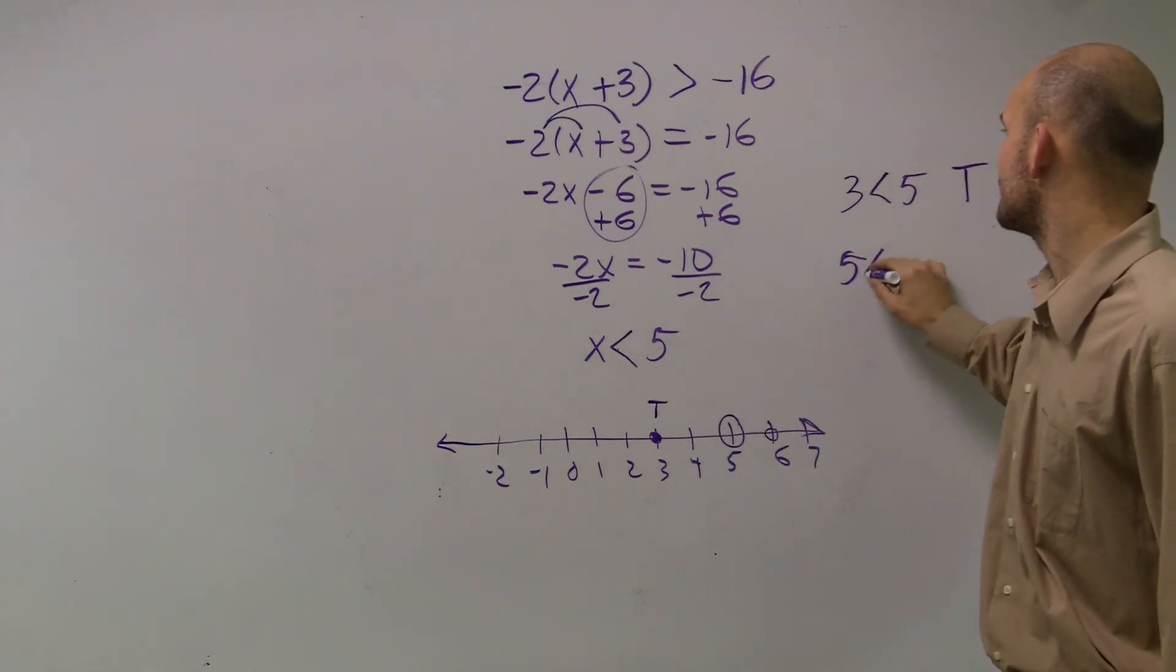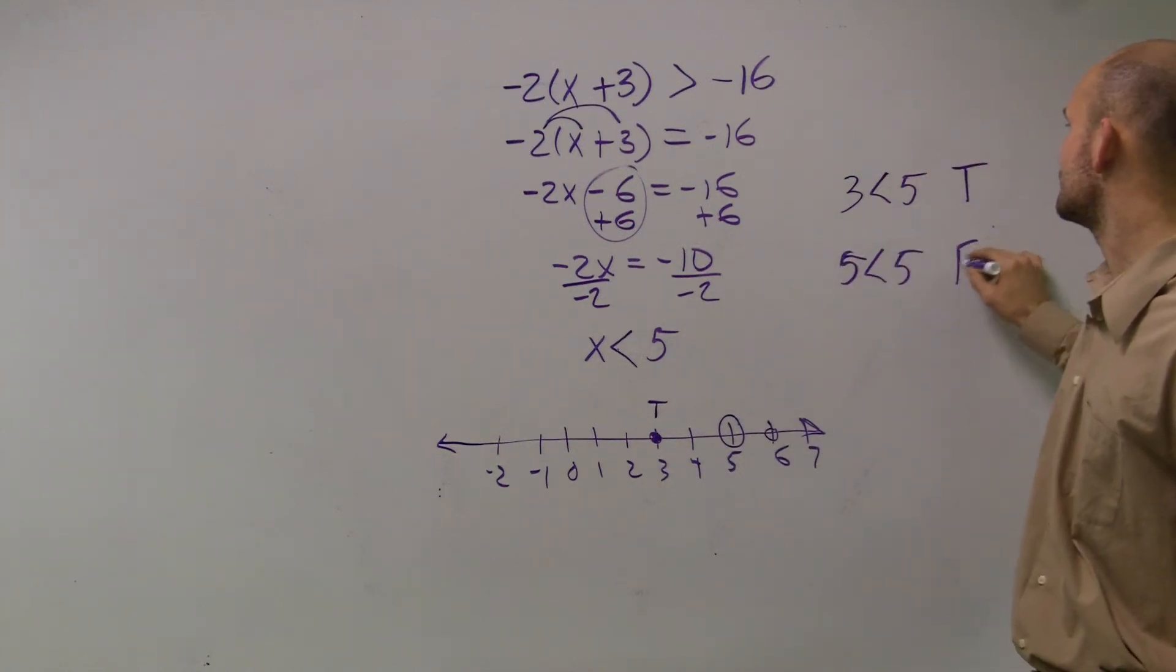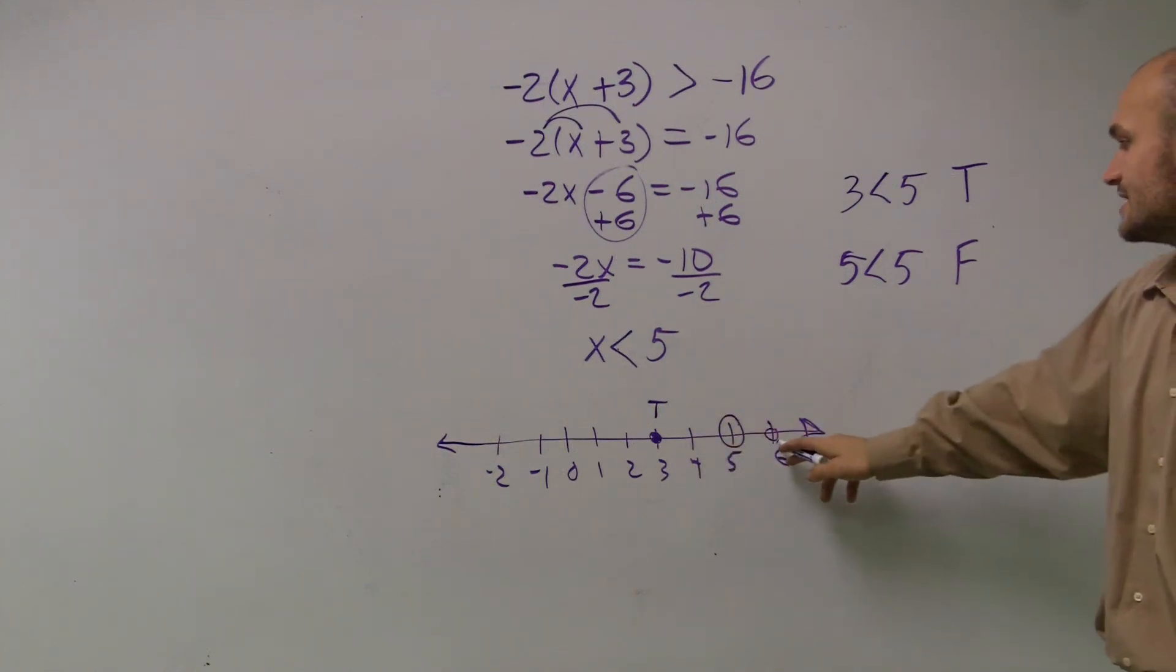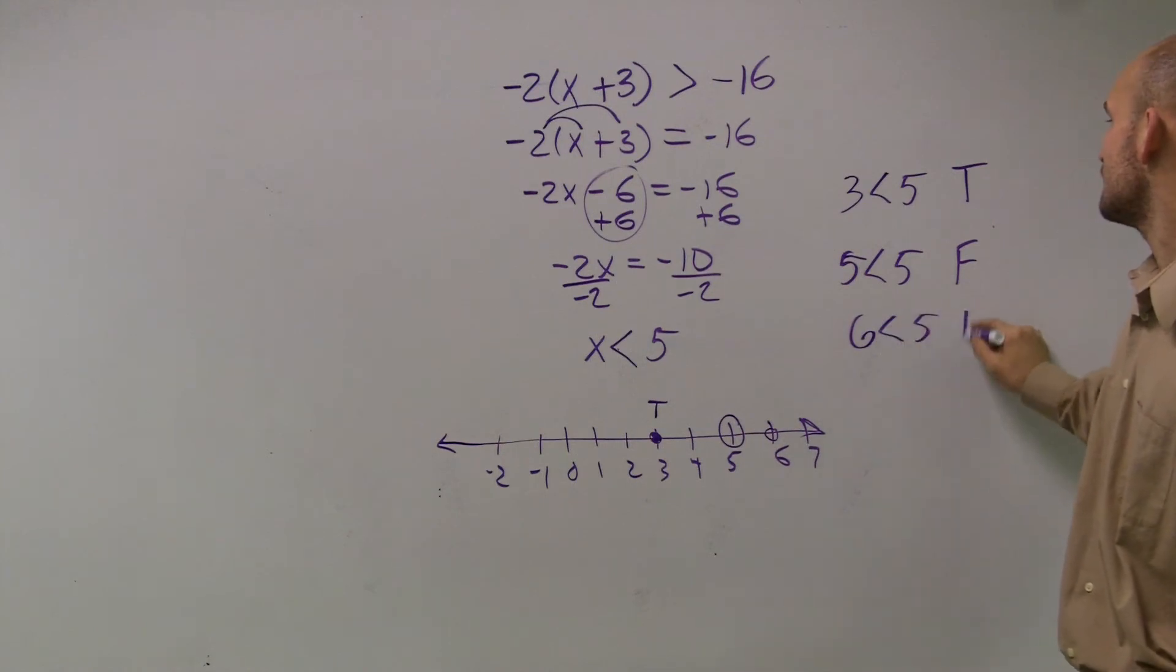Then test: is 5 less than 5? False, so the dot remains open. Is 6 less than 5? False. Dot remains open.